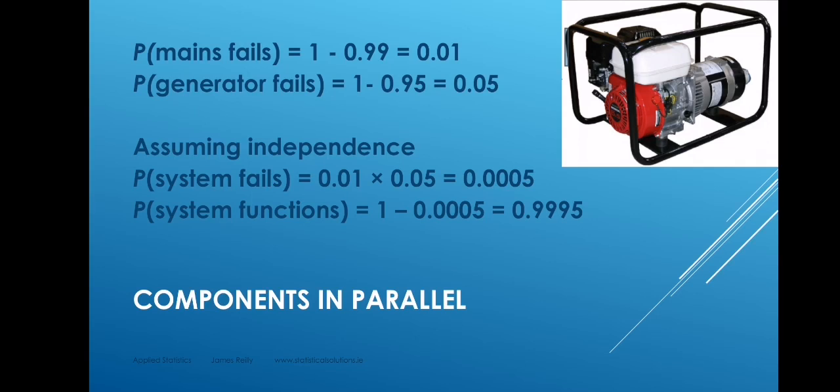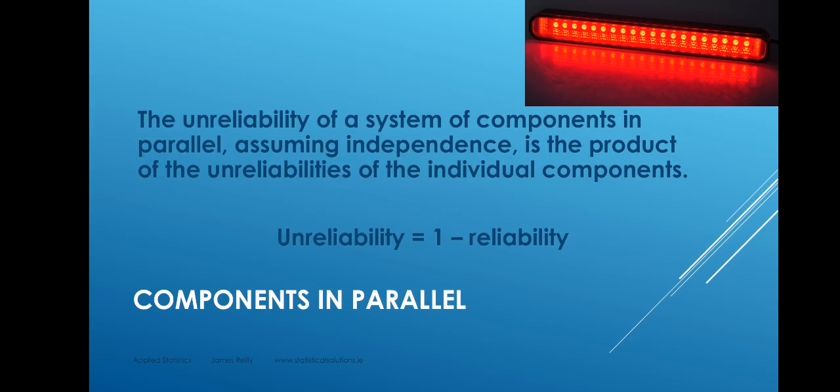So you notice in this case the reliability of the system is better than the reliabilities of the individual components. But of course it costs because we have to have extra components that aren't always required in place, and that incurs greater investment. So in general, we can say for components in parallel, the unreliability of a system of components in parallel, assuming independence, is the product of the unreliabilities of the individual components, where the unreliability is 1 minus reliability.